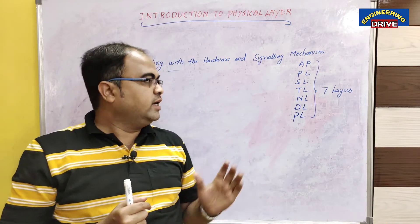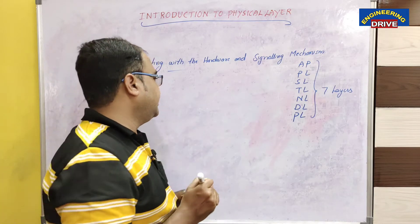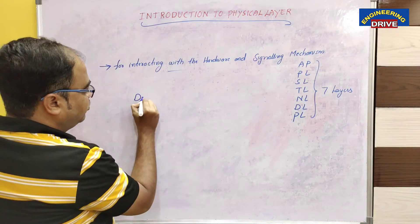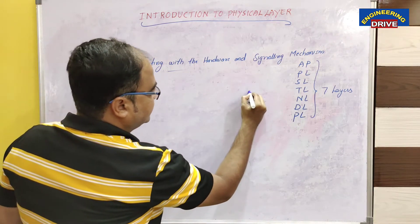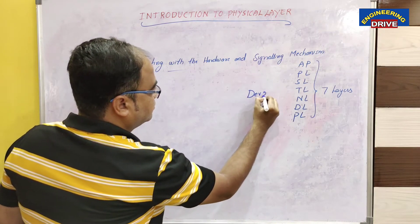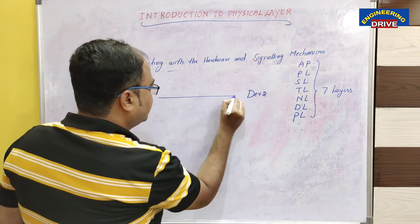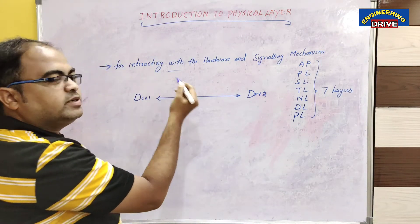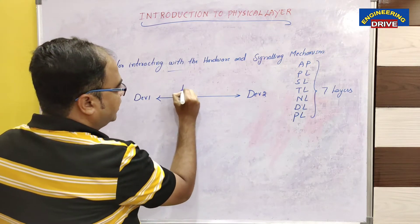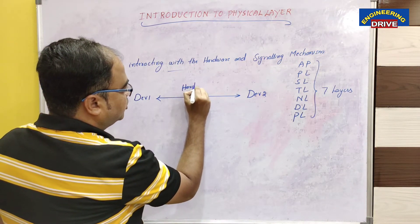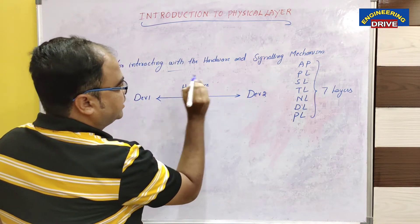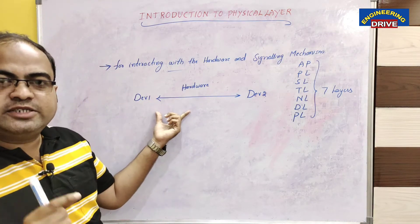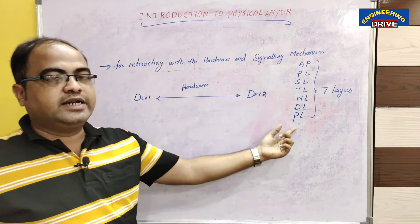One more important point — in computer networks, we know that there are different devices communicating with each other. Let us say this is device one and this is device two. In order to establish communication between these two devices, there should be some sort of hardware available between them. Physical layer is responsible for establishing this type of hardware.